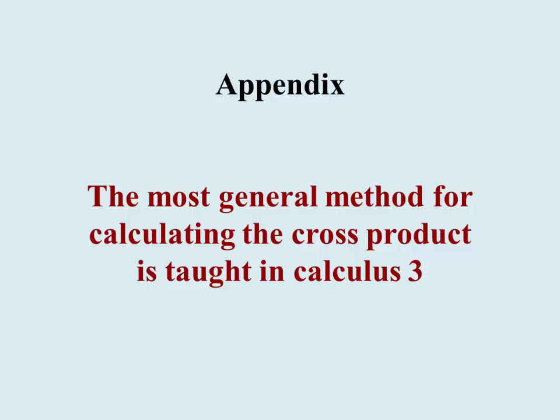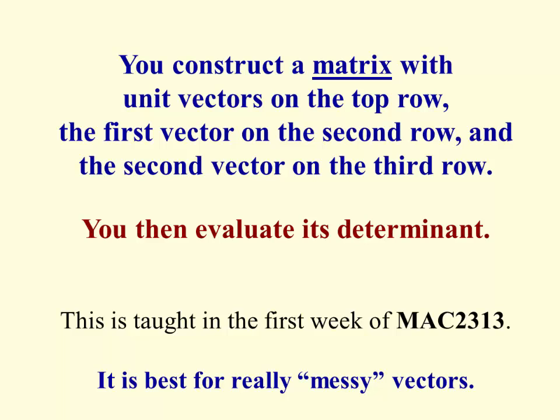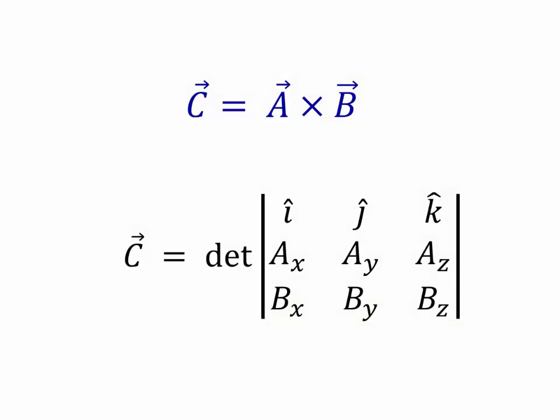And one final detail that I've also mentioned before, the most general method is to use a determinant of a matrix. You put unit vectors on the top row, followed by the first vector, followed by the second vector, and evaluate its determinant. This is taught in the first week of Calc 3, and I really urge you to learn it, because it is absolutely the best method for what I would consider messy vectors. It looks like this. When you do A cross B, you get the determinant of i, j, k across the top, the x, y, z's for A in the middle, and the x, y, z's for B in the bottom. Again, they have to be in the correct order, or you will get the wrong answer.